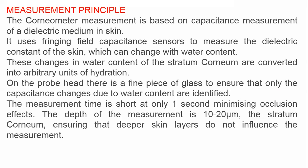The principle of the corneometer is that it measures skin hydration by utilizing capacitance — specifically, it measures the dielectric constant of the skin using fringing field capacitance sensors. The dielectric constant of the skin changes with the presence of water content. As the water level is minimized or increased, the dielectric constant changes. The changes in water content of the stratum corneum are converted into arbitrary units of hydration, and that dielectric constant is measured as capacitance by the sensors.